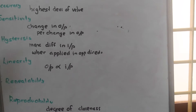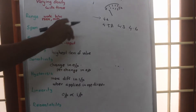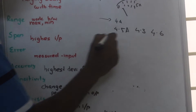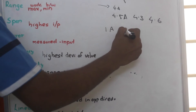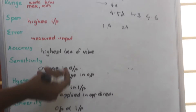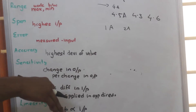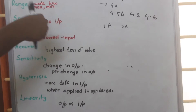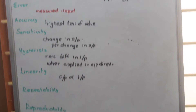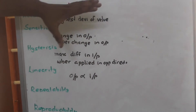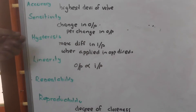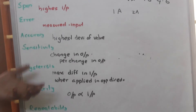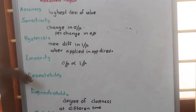Hysteresis means suppose we are increasing the current in the circuit by decreasing the resistance. Suppose now the current was 1 ampere and we decrease the resistance so that the current becomes 2 ampere. We can also increase the resistance such that the current changes from 2 ampere to 1 ampere. In both cases we will be getting different sets of readings. That maximum difference in the input when applied in opposite directions — when we are increasing the current we get one set of values, and when we are decreasing we get another — that difference is called as hysteresis.